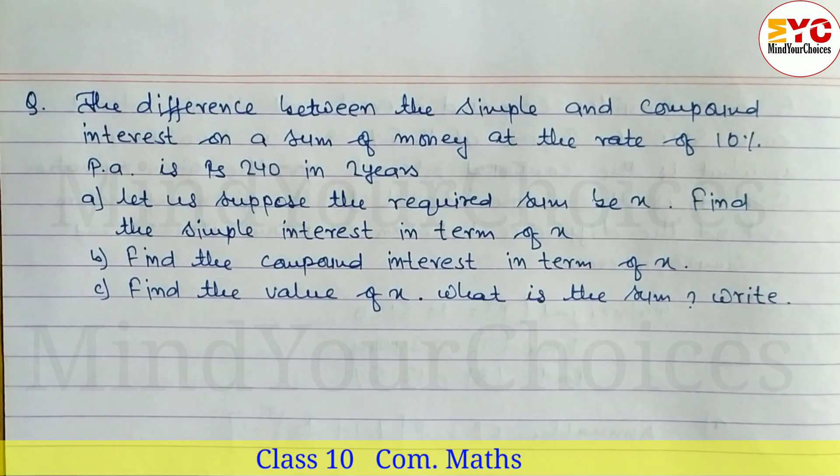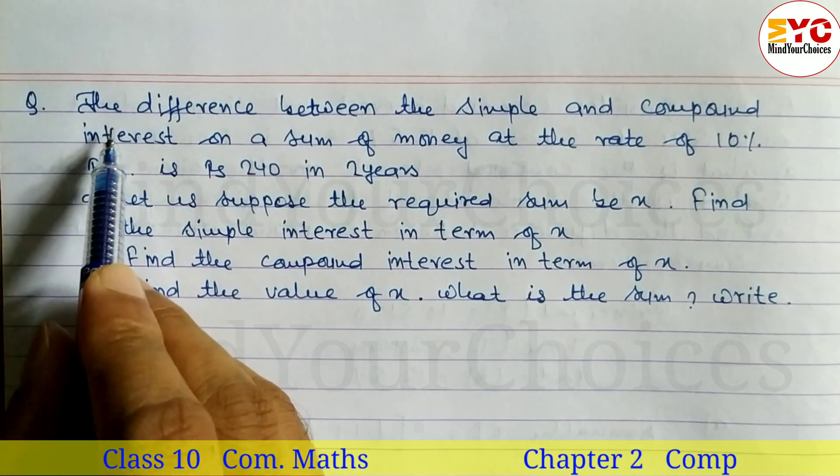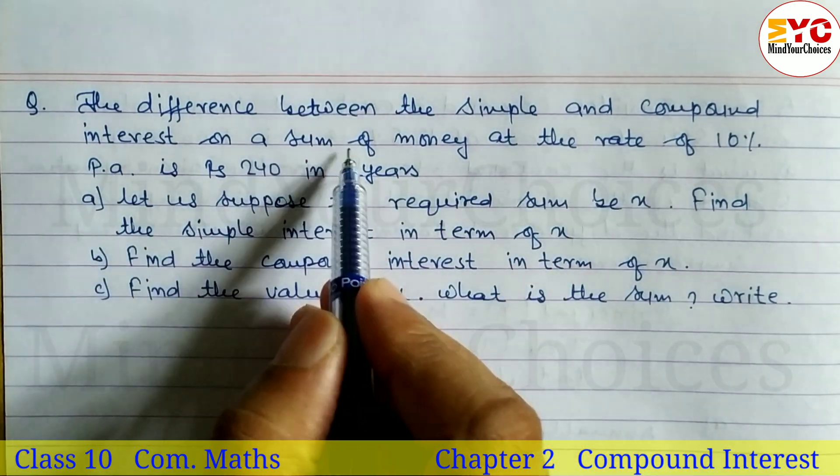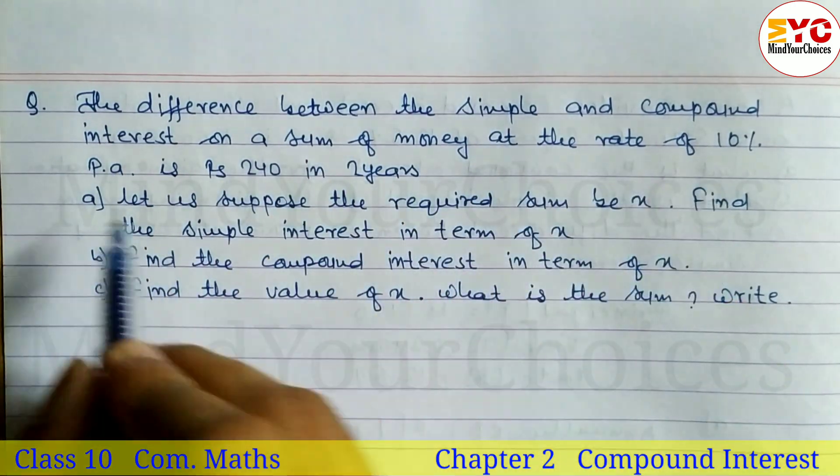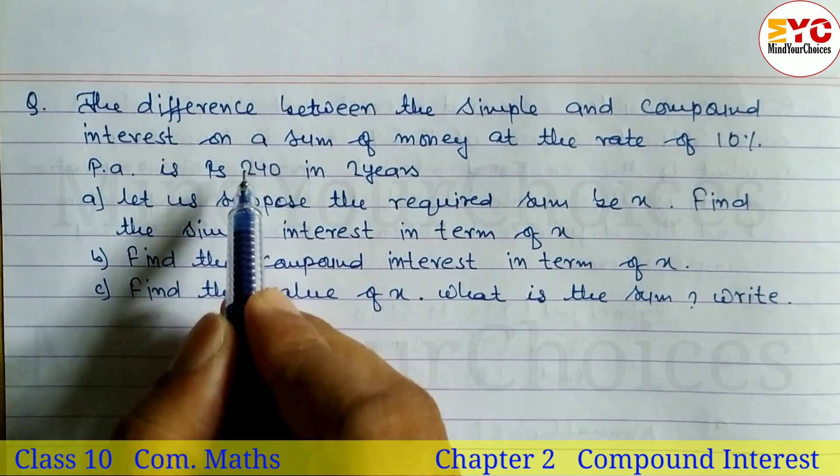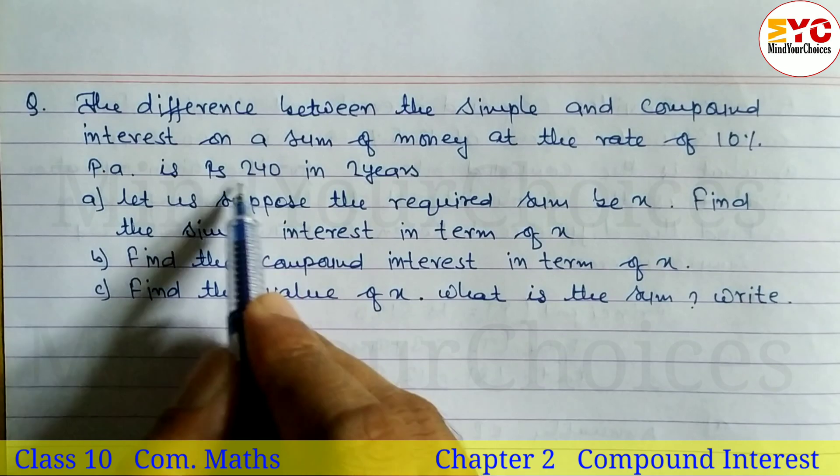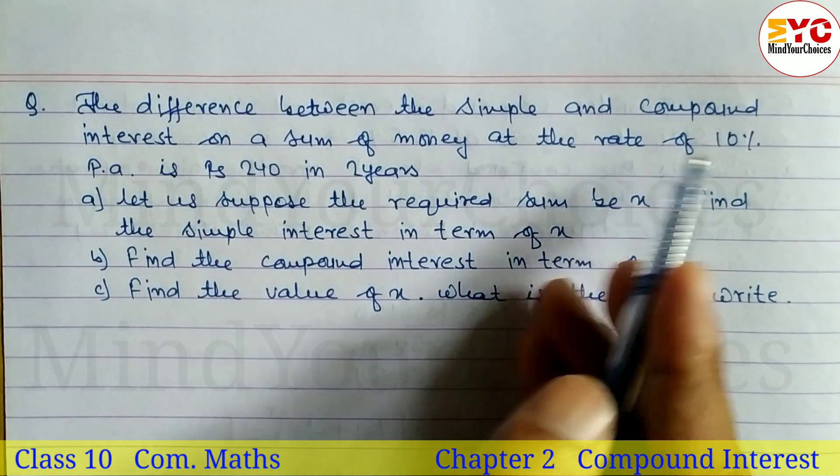This is a Class 10 compound interest question from chapter 2. The question states: the difference between simple and compound interest on a sum of money at the rate of 10% per annum is rupees 240 in 2 years. The difference between compound interest and simple interest is given, the rate is given, and the time is given.